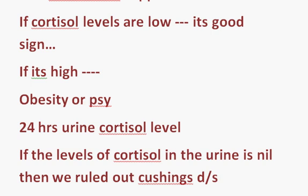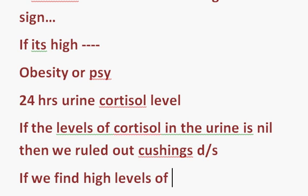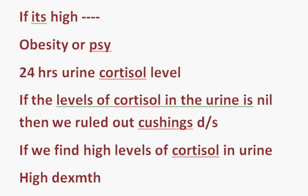If we find high levels of cortisol in the urine, this is the point to worry — it confirms Cushing's disease or syndrome. The next step is to find the location of the lesion. It can be in the pituitary or ectopic, such as lung cancers. So the next test is the high dexamethasone suppression test.